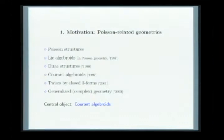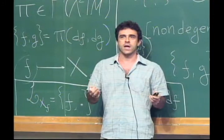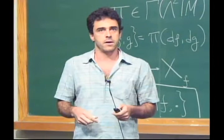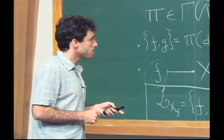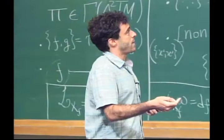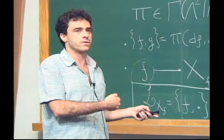A central object in this whole viewpoint to geometrical structures is something called Courant algebroids. Basically, Courant algebroids are the ambient where you can define geometrical structures. Usually geometrical structures are defined on manifolds, but it turns out that any manifold has a canonical Courant algebroid associated to it. Let me tell you first what the canonical Courant algebroid associated with a manifold is, and then how to view various geometrical structures in terms of it.